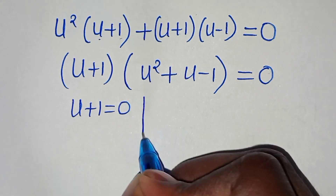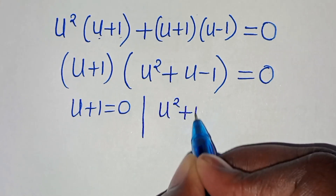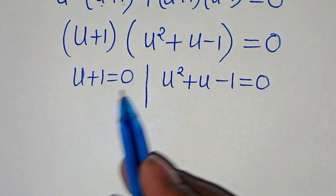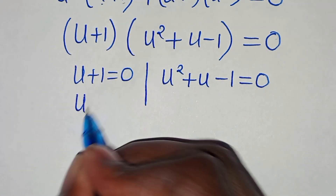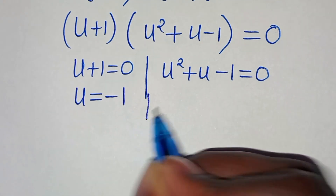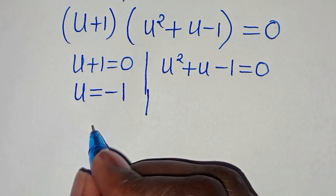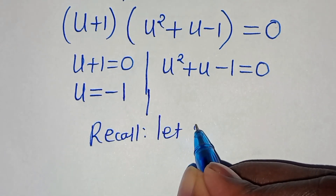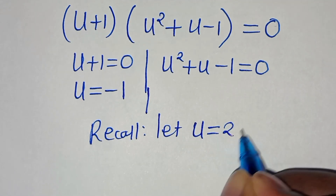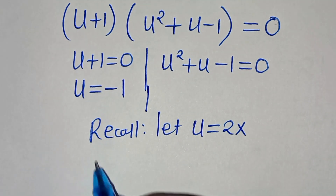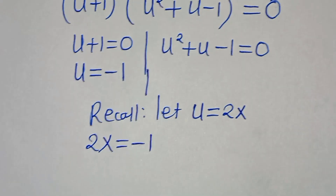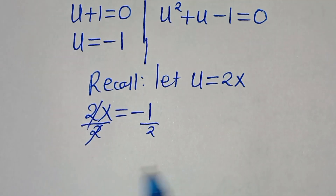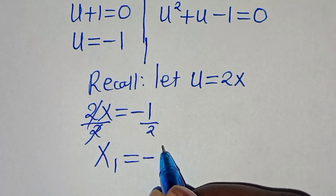We now have two factors: u + 1 = 0, and u squared + u − 1 = 0. From the first factor, u = −1. Recalling that u = 2x, we have 2x = −1, and dividing both sides by 2 gives x₁ = −1/2.